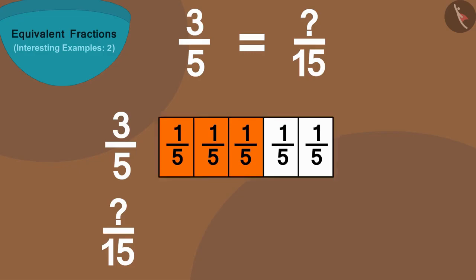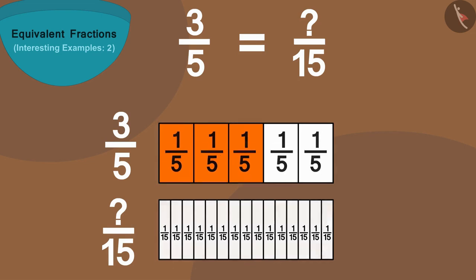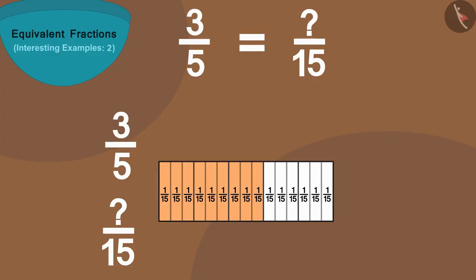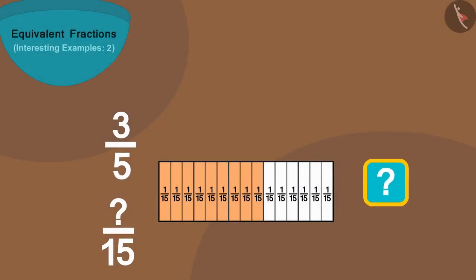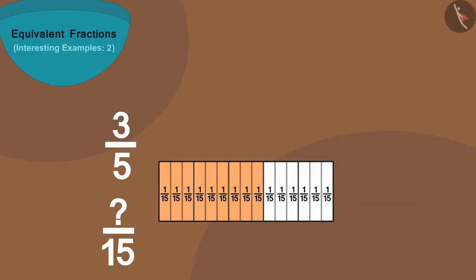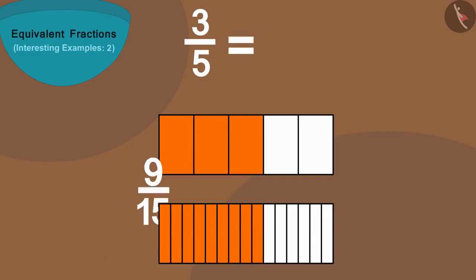Let us make a strip of equal length just below it and divide it into fifteen equal parts. Now if we put this strip on top of the first strip, we will find that fifteen parts of this strip are equal to five parts of the first strip. Can you tell how many parts out of fifteen are equal to three colored parts? Yes — nine parts! In this way, three by five is equal to nine by fifteen.